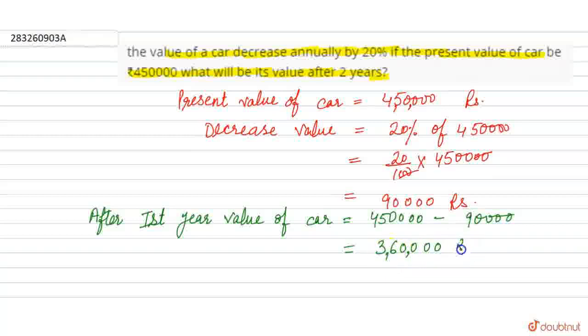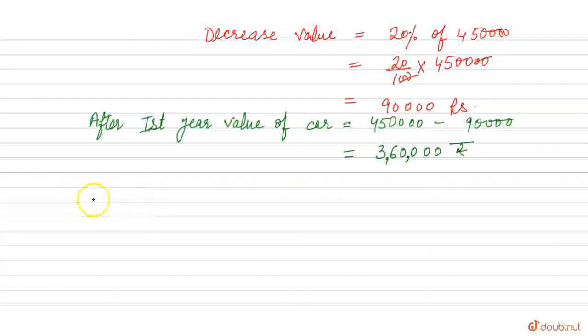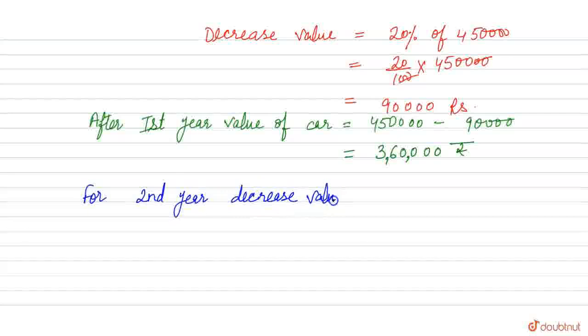So now we calculate the second year. For the second year, the decrease value of car is 20% of 360,000, that's 20 by 100 times 360,000. Two zeros cancel, then 36 times 2 is 72, add 3 zeros, so 72,000.